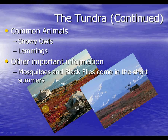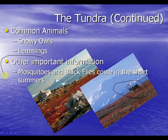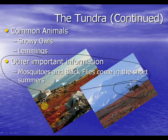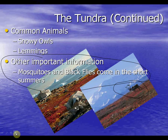Some common animals in the tundra are snowy owls and lemmings. There's also an elk or buffalo in the picture. An interesting fact: mosquitoes and black flies only come during the three-month summer. Personally I would love that — unfortunately in Ohio they come pretty much all the time.